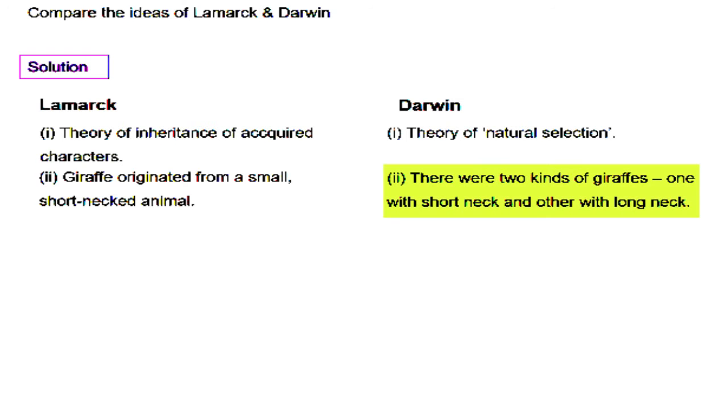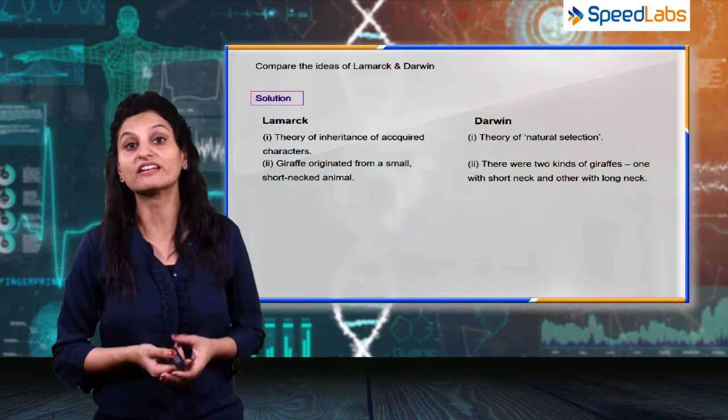Whereas Darwin said that giraffes were born with variable necks. He basically introduced variation, so giraffes were born with variable necks - one had a shorter neck and the other had a longer neck, but he could not explain the reasons of the variation.